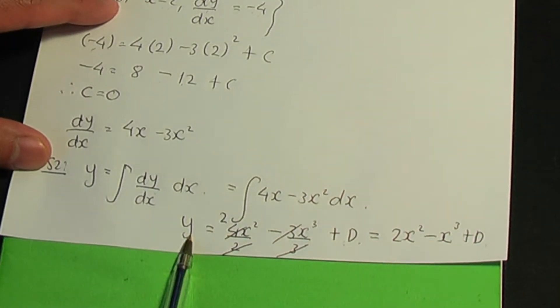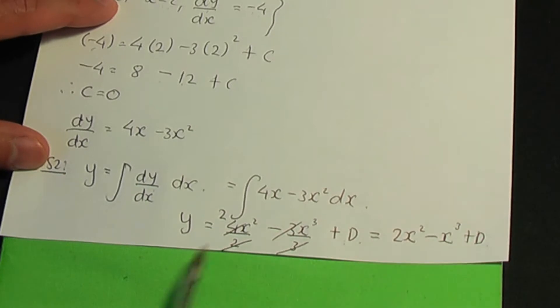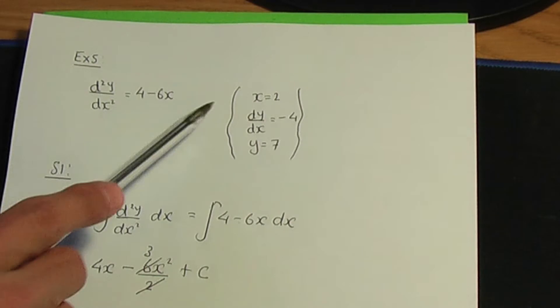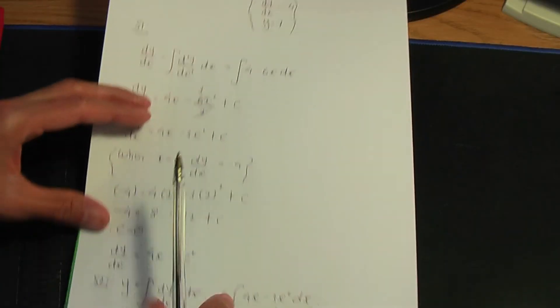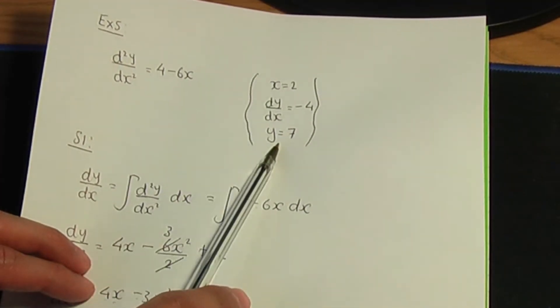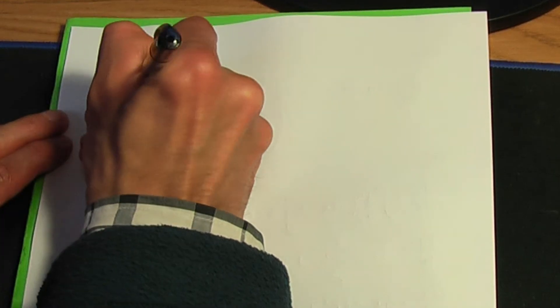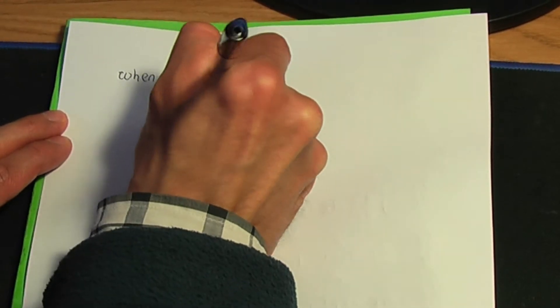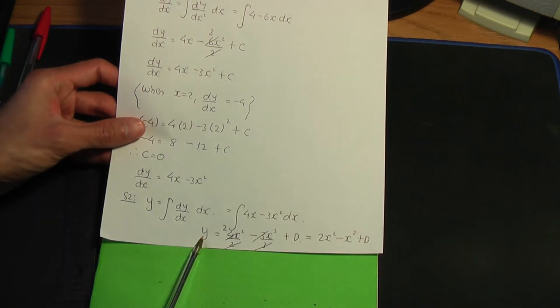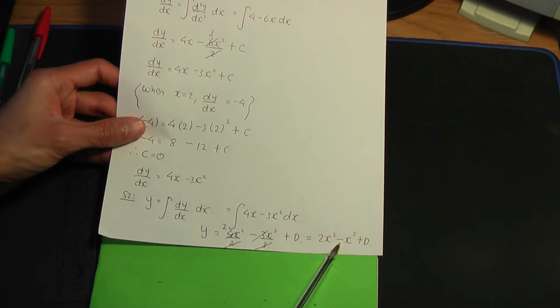To work out d, we use the x and y values from the given conditions. The x value is 2 and the y value is 7. So when x equals 2, y equals 7. Substituting into y equals 2x² minus x³ plus d gives us 7 equals 2(2²) minus 2³ plus d.